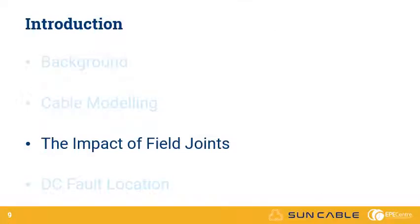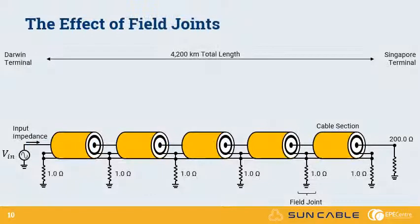Moving on to the field joints, the impact of the field joints is dependent on how well the sheath and armour conductors are bonded to earth and the number of field joints. An analysis assumes that the sheath and armour and earth are electrically isolated between each of the field joints and compares scenarios with different number of field joints within the cable.